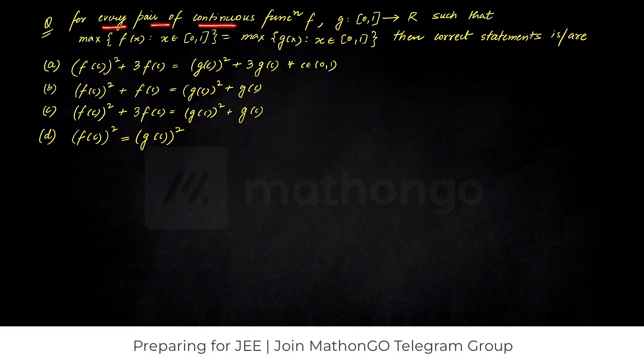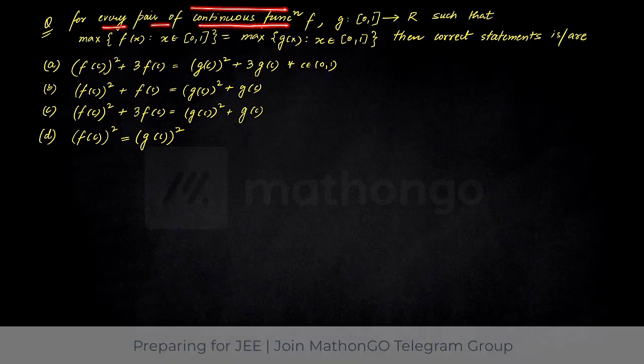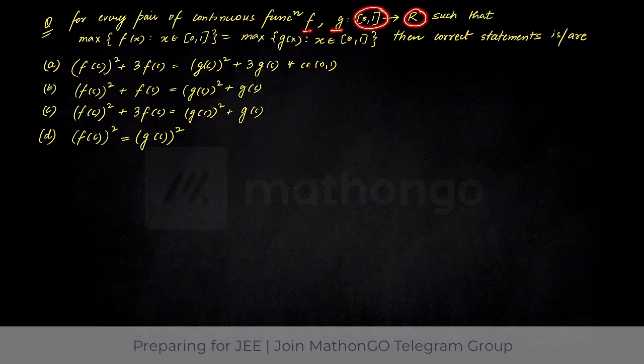See, for every pair of continuous functions—so the functions which are going to be in this position are continuous f and g having domain [0,1] to R such that... Now, don't get confused with this kind of a statement. Let's read it out and then we learn from this question that these kind of statements should not be much of a bothering statement to you in the exam.